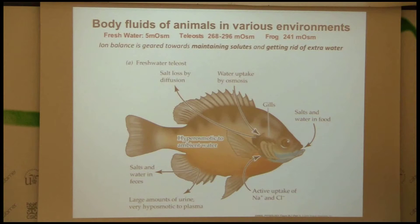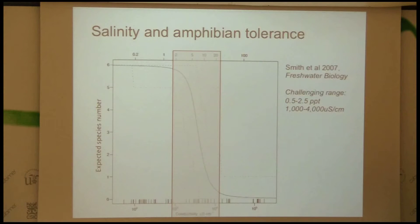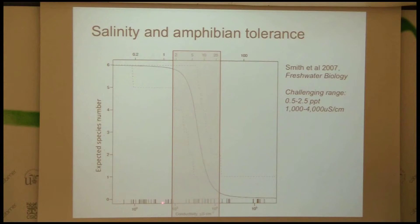Although there are populations, as Yvonne will tell you, that within species can tolerate more salinity over time if there's evolutionary selection for that — so there is variation within species of this tolerance. In general, this graph shows the expected number of species, which precipitously drops with amphibians in particular across this range of conductivity.